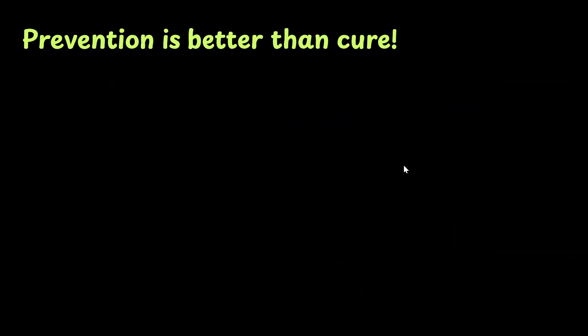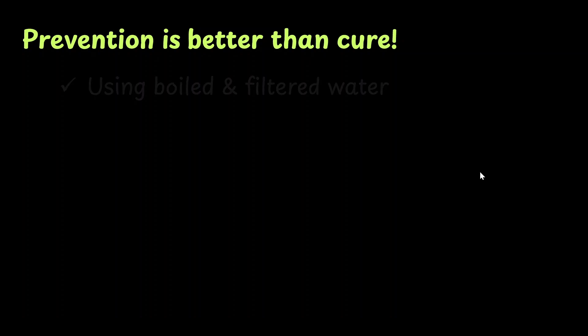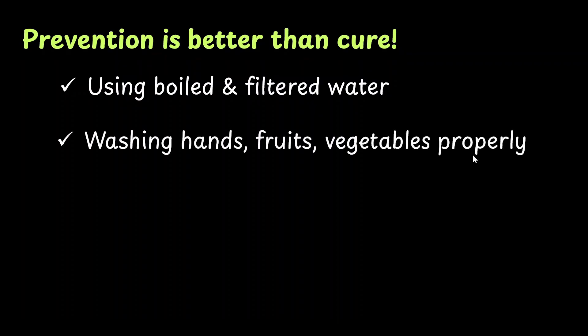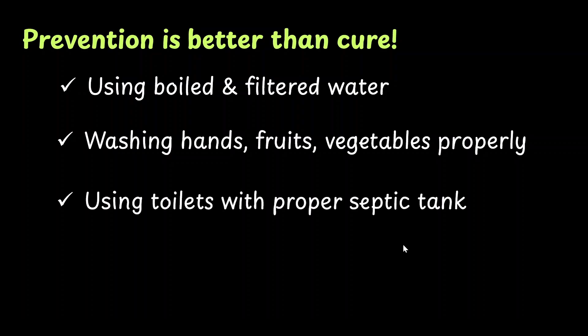How do we prevent amoebiasis? First, we should always use boiled and filtered water. We must wash our hands, fruits, and vegetables. Finally, we should use toilets attached to a proper septic tank so there is no overflow of waste matter.